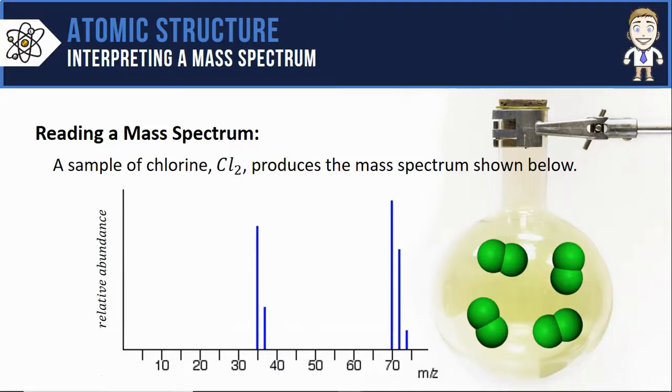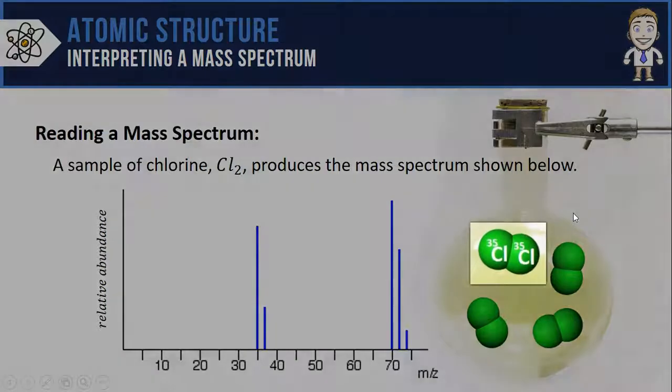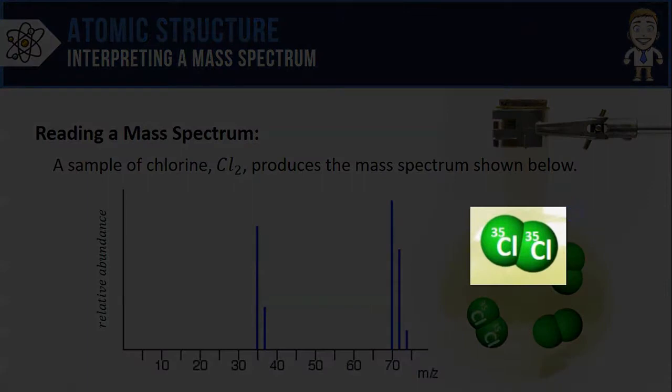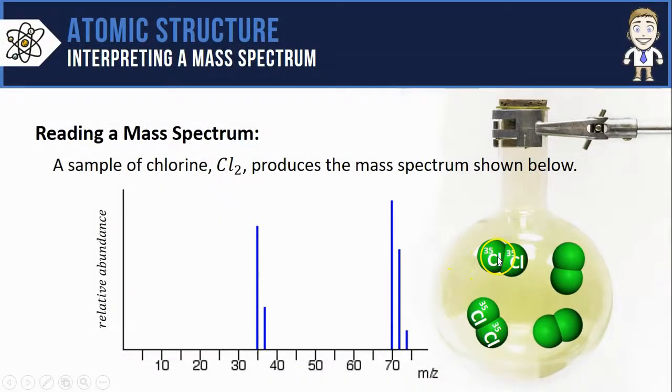Now that I know the different isotopes that exist for chlorine, I can start to guess that some of these Cl2 molecules might be made of chlorine atoms where both are the chlorine-35 isotope. That means that the total mass of this Cl2 is 35 plus 35, which is 70, thus explaining the very tall, very abundant peak we see here with a mass of 70.